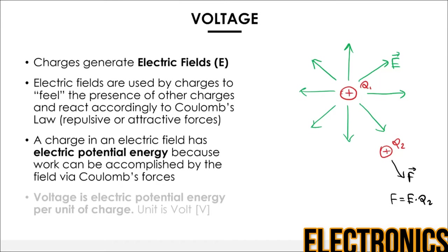Let's understand the connection between electric field and electrical potential energy. We have two charges, Q1 and Q2. Q1 emits an electric field E in all directions, indicated with a little arrow showing direction. Q2 feels this field, and the intensity of the field at Q2 depends on the distance r — the higher the distance, the lower the intensity. Q2 is subject to a force F equal to the electric field at its position multiplied by Q2.